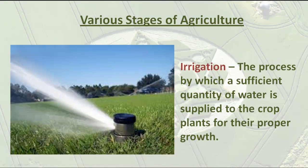The process by which a sufficient quantity of water is supplied to the crop plants for proper growth is called irrigation.